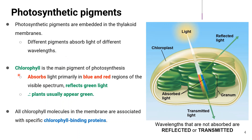Out of many pigments, chlorophyll is the main pigment of photosynthesis. It absorbs light primarily in the blue and red regions of the visible spectrum and reflects green light — that's why plants usually appear green. Any light that falls under the blue and red regions will be absorbed.